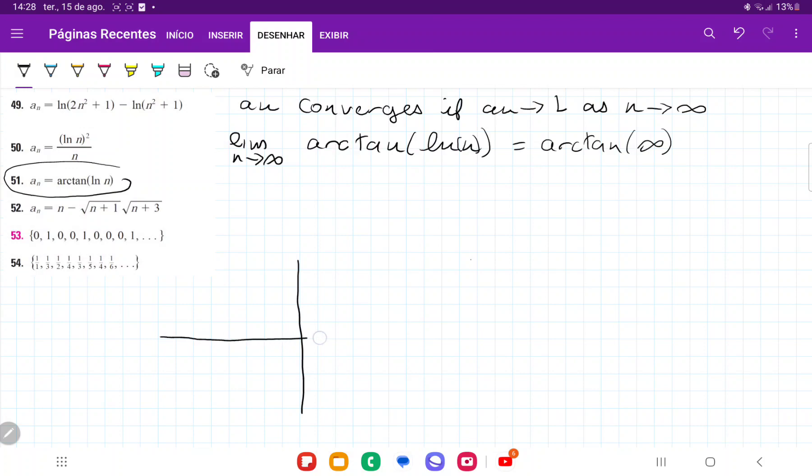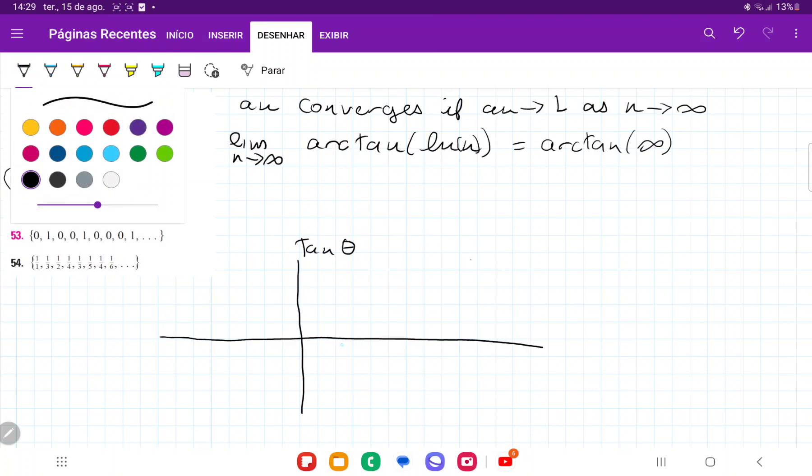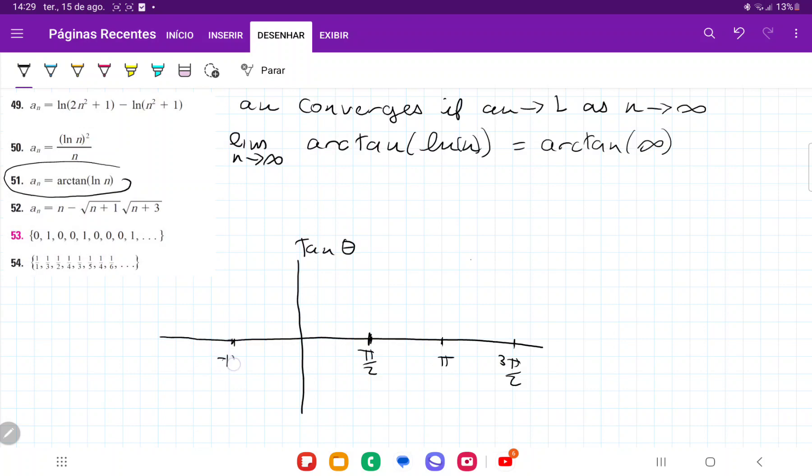So this is going to be tangent theta. And tangent here, we're going to have we're going to call this pi over 2, pi, 3 pi over 2, that is going to be negative pi over 2, and so on. And so we're going to have a vertical asymptote here, and this graph is going to go, it's going to go like this. So it goes like so, and it goes like so.